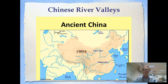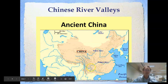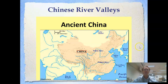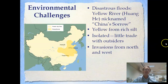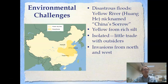Moving on to Chinese river valleys, we have both the Yellow River — flowing out into the Yellow Sea — and the Yangtze River, flowing out into the East China Sea. There are environmental challenges here as well. The Yellow River, also called the Huanghe River, is nicknamed China's Sorrow because it floods unpredictably, wrecking fields and cities built along the river. The name 'Yellow' comes from the rich yellow silt brought down from higher up the river, making the fields very productive.